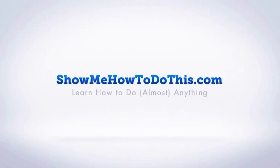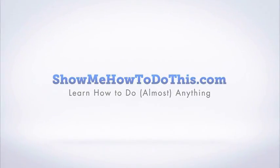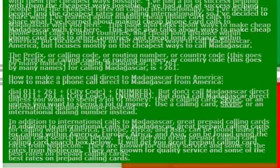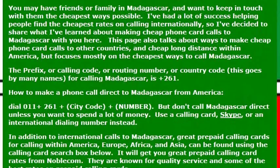Madagascar is someplace where I would love to go. There are so many species of plants and animal life in Madagascar and I just think it'd be an interesting place to go and see. When I'm ready to go there I'm going to want to call the country to make sure that my reservations are all taken care of. So I want to know the country code for Madagascar, which is 261.